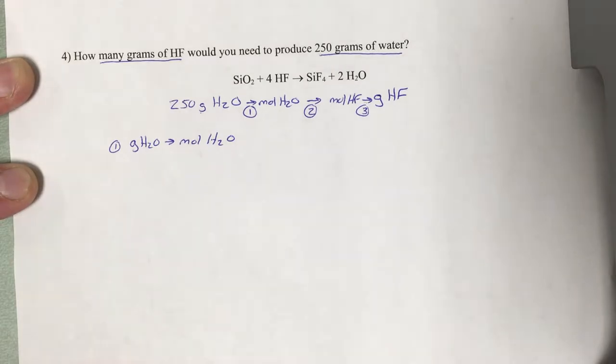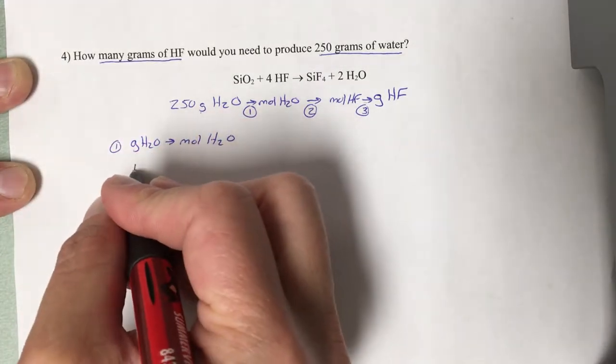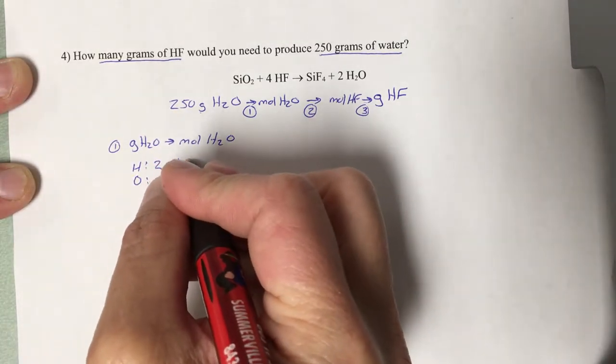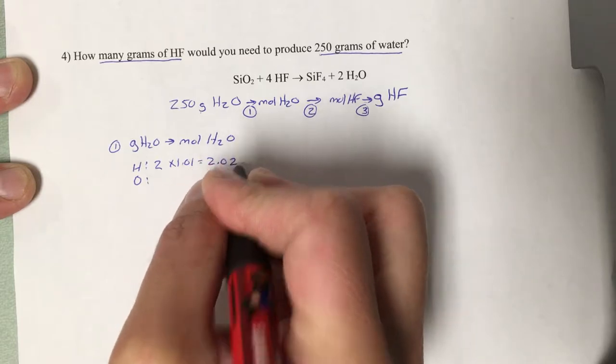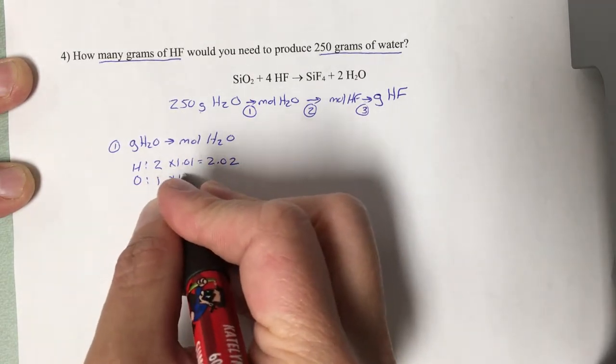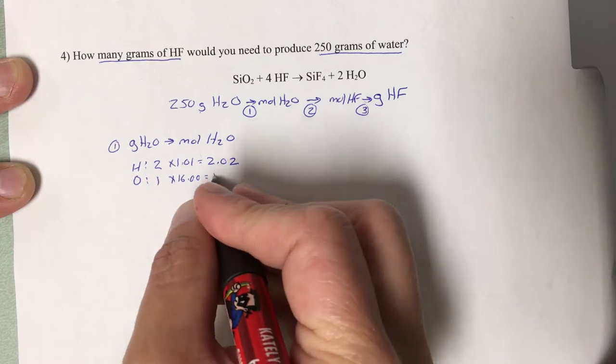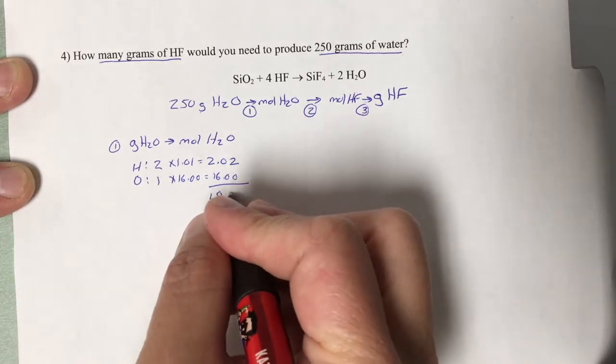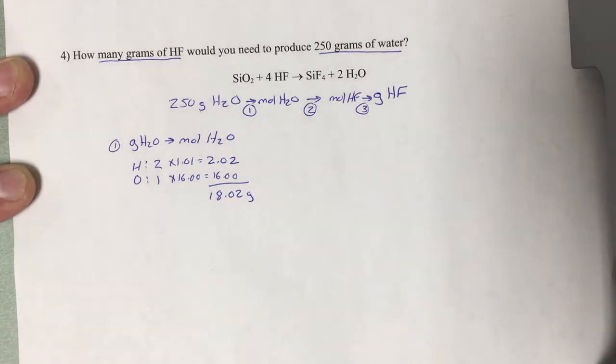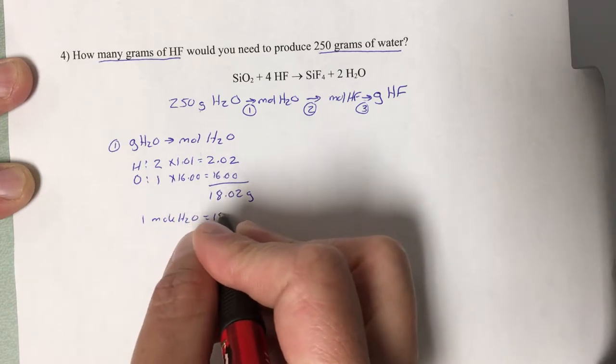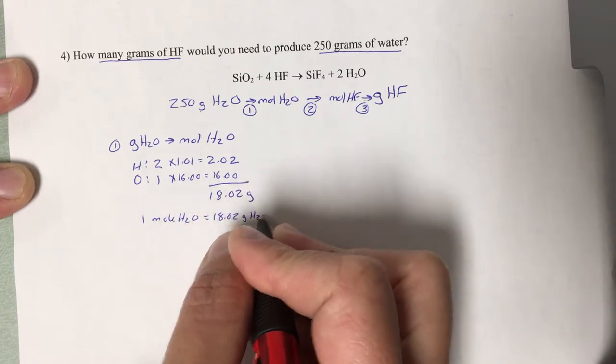First conversion: grams of water to moles of water. To do the mole mass conversion for a compound, I need to know its formula mass. Water is composed of hydrogen and oxygen. There are two hydrogens, each one has a mass of 1.01, giving me a total mass of 2.02. H2O has one oxygen, which is 16.00 times 1. Add the two together, the formula mass of water is 18.02 grams.